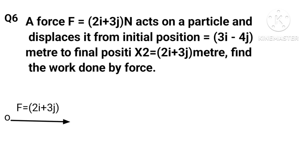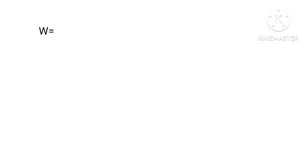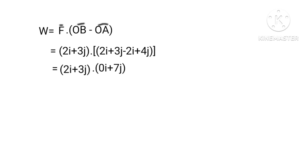Given F = 2i + 3j, work done W = F · (OB - OA) = (2i + 3j) · [(2i + 3j) - (2i - 4j)] = (2i + 3j) · 7j = 21 joules.